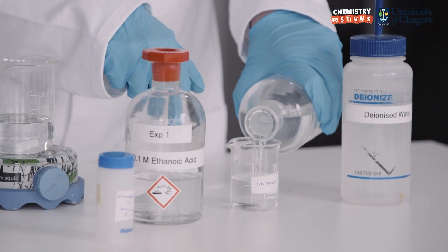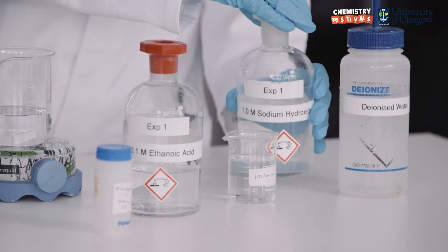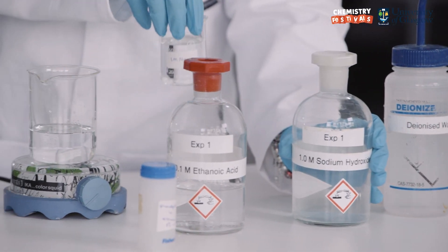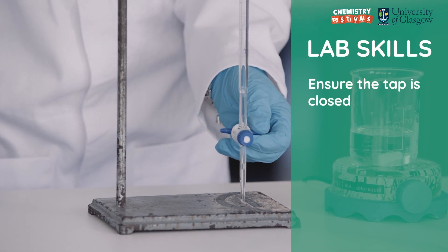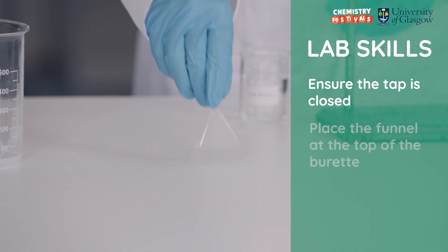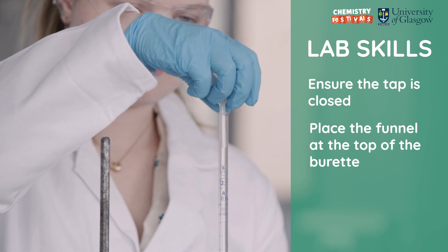First I'm going to pour out the sodium hydroxide solution into a small beaker. Now we are going to wash the burette. I'm going to make sure that the tap is definitely closed. Now I put the funnel into the burette.